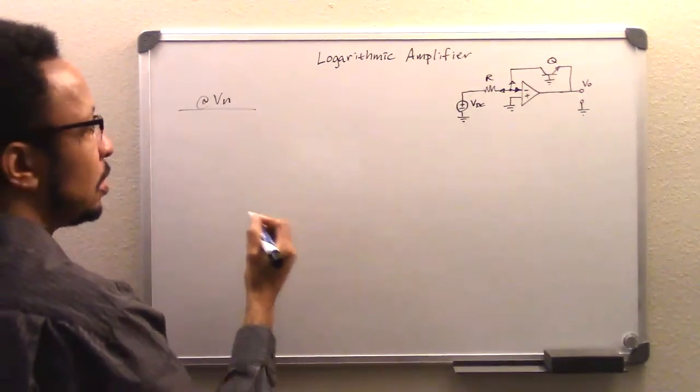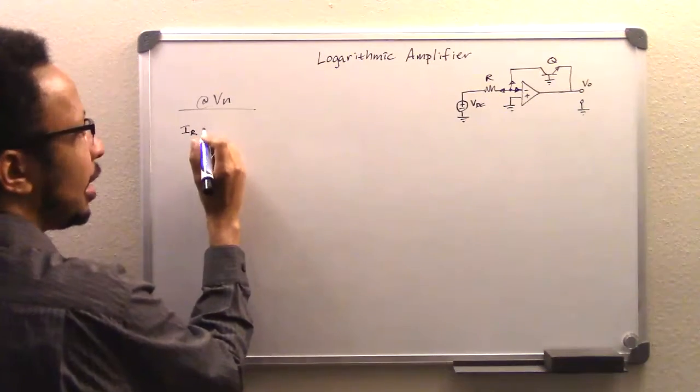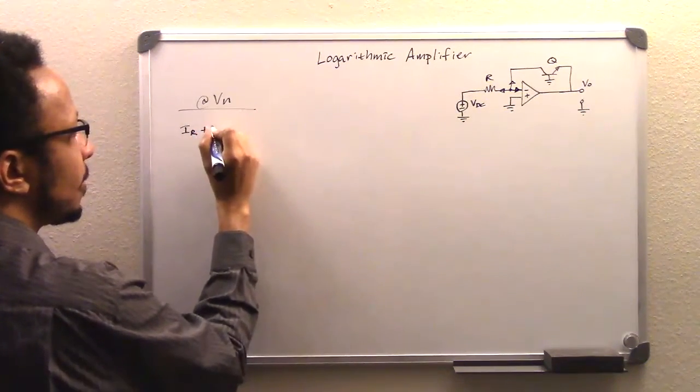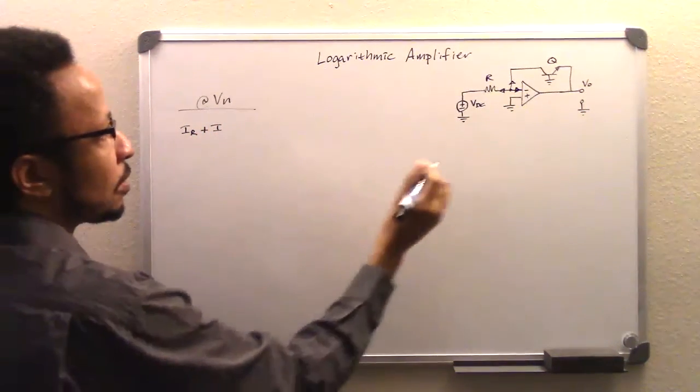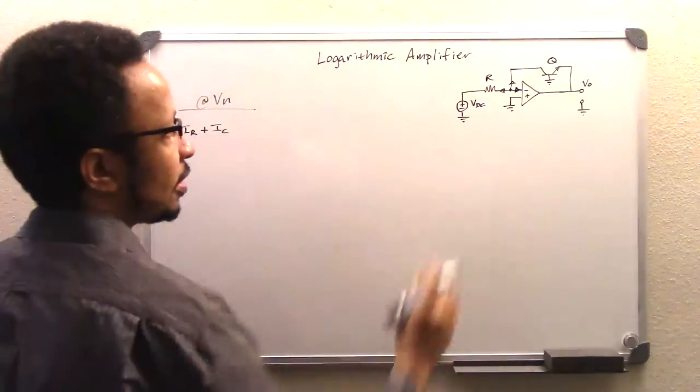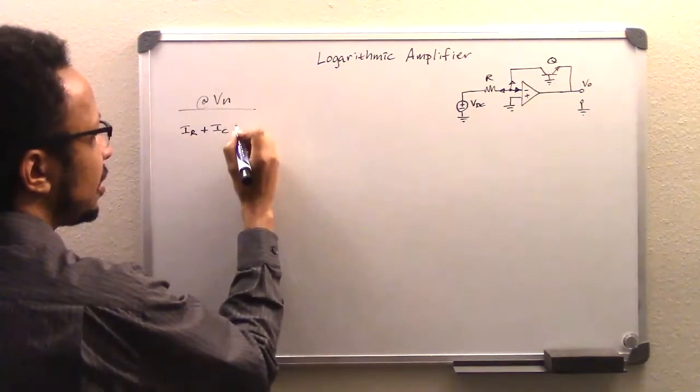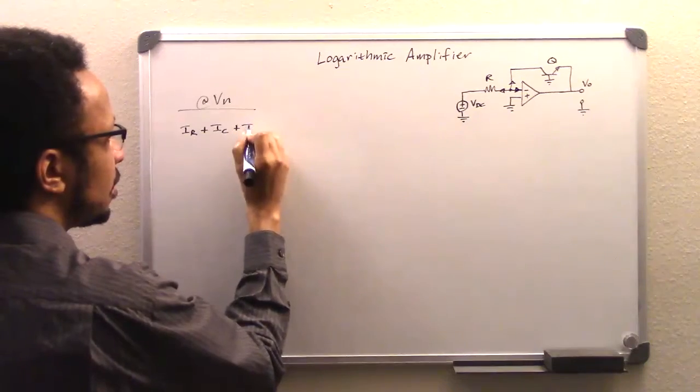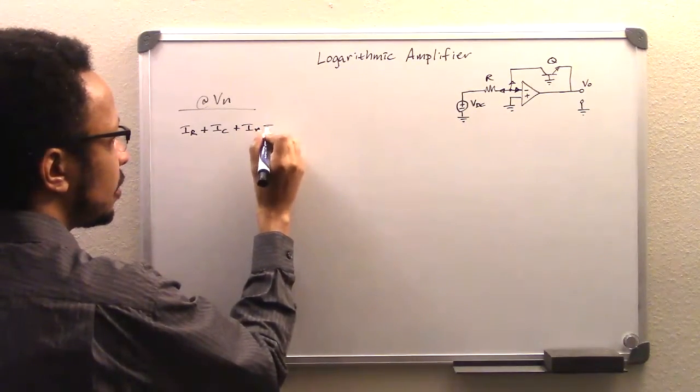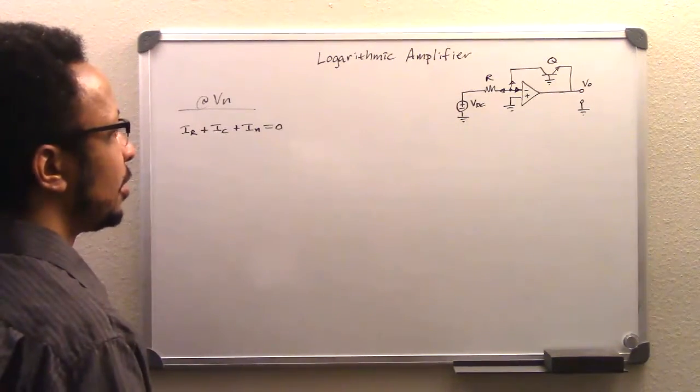And so we're going to say IR plus this direction here, that's going to be IC for our transistor there, because that's the collector. So IR plus IC plus IN is going to be equal to zero. IN is for our inverting terminal there for an op-amp.